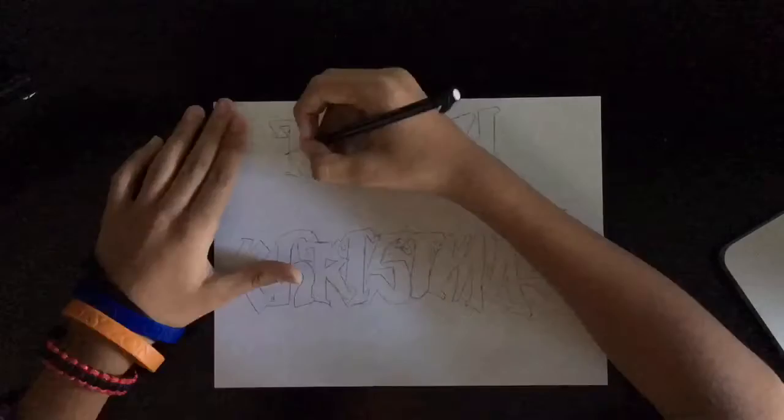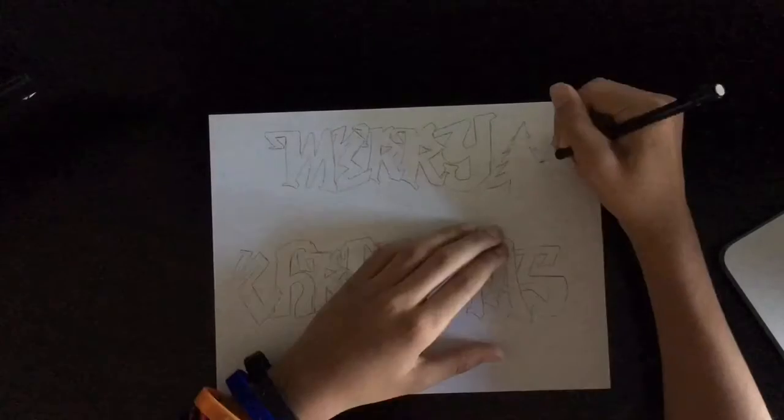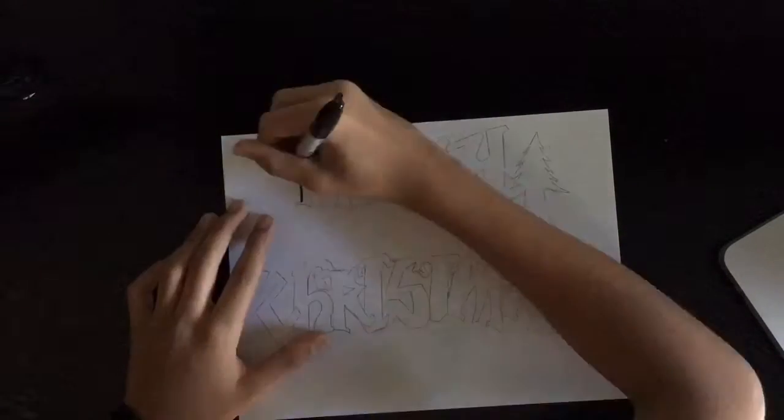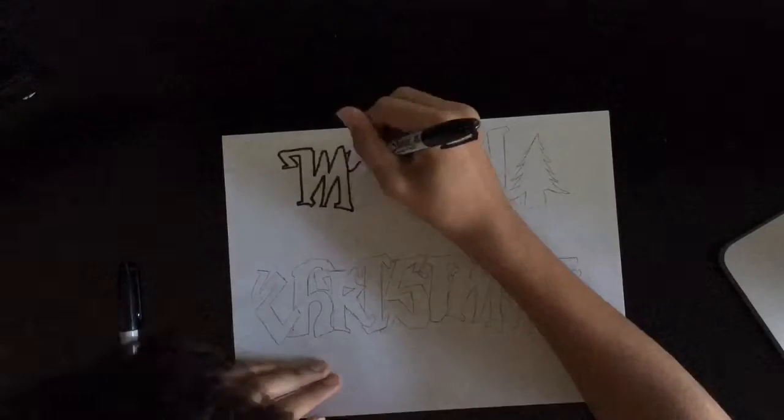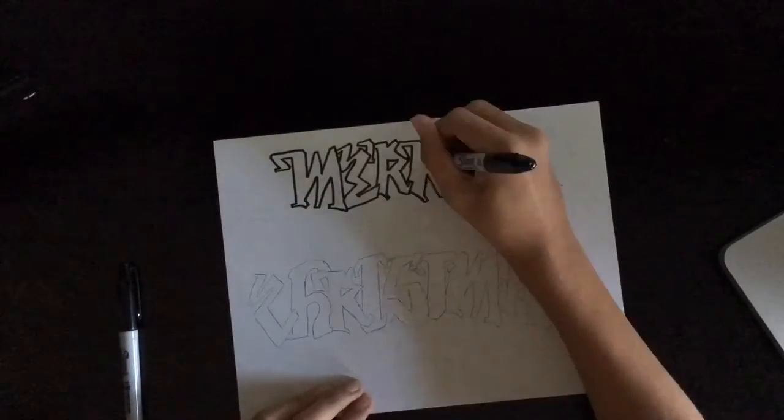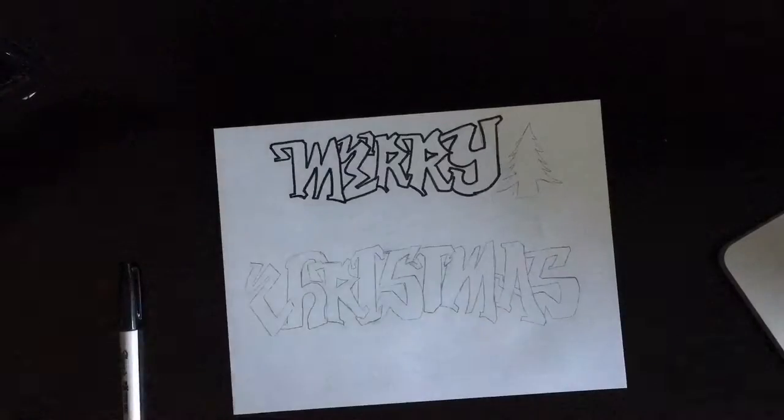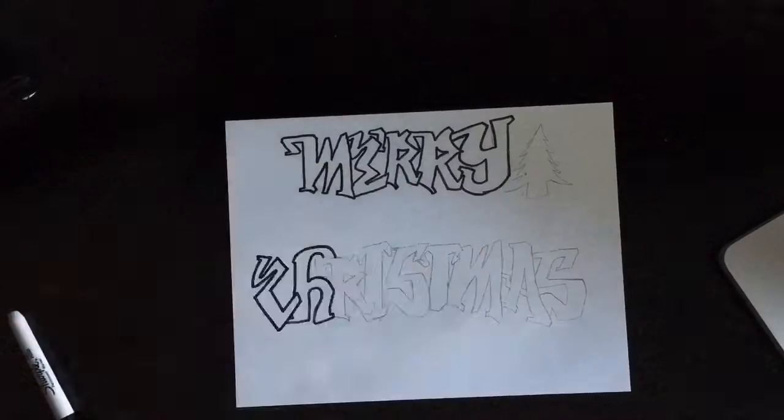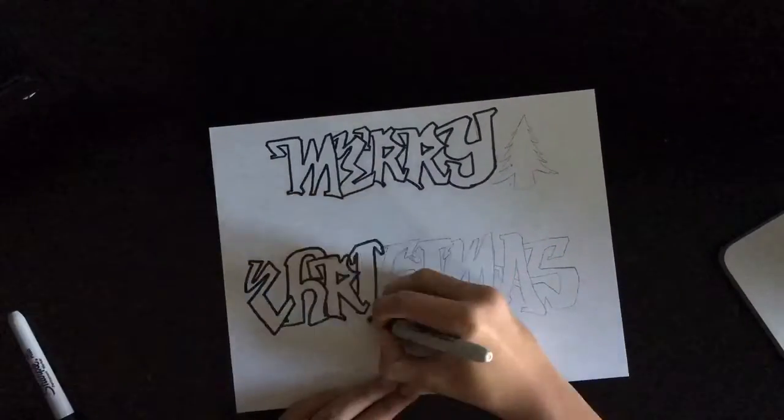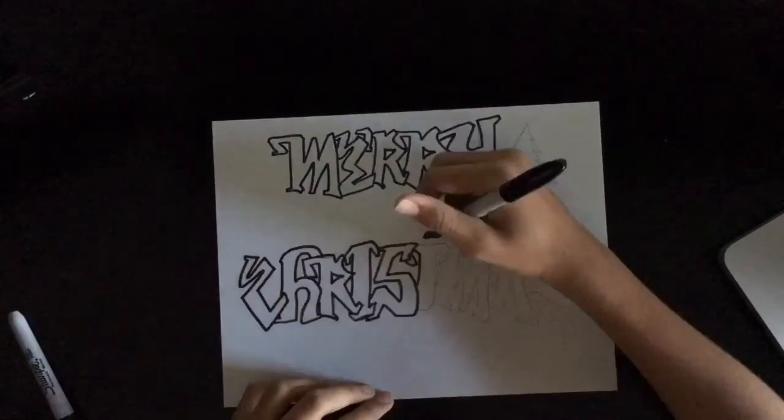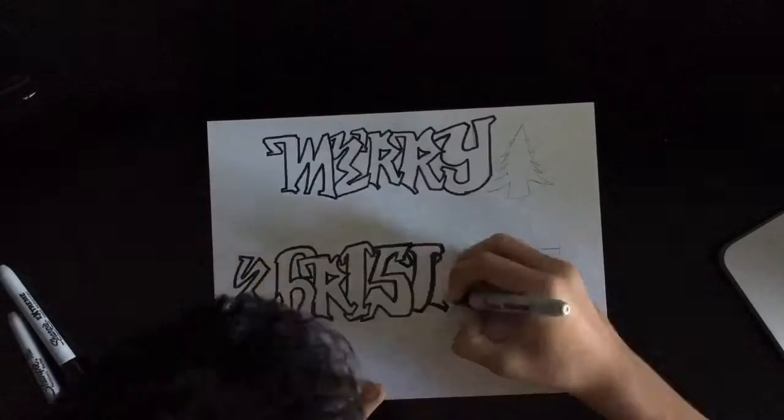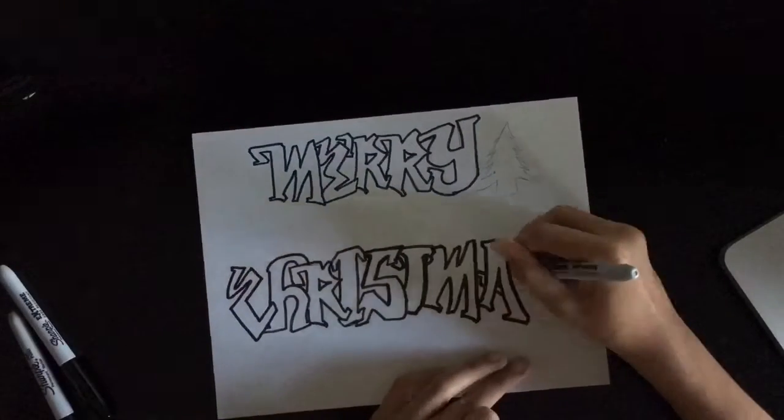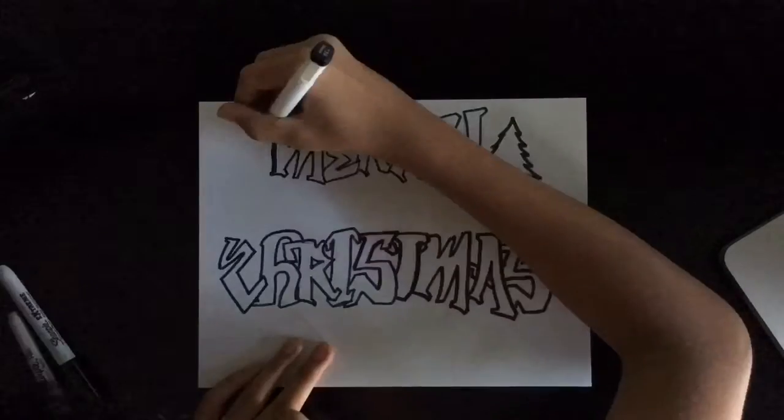So here I finished up my outline. I decided to add a little Christmas tree on the corner, and then I'm going over all the words in a black Sharpie marker. Just any old black Sharpie marker you can find at Walmart, Staples, pretty much anywhere. You probably have one in your house. If you don't, any black marker would work. As you see, my Sharpie marker started to die out already and I'm going through three Sharpie markers.